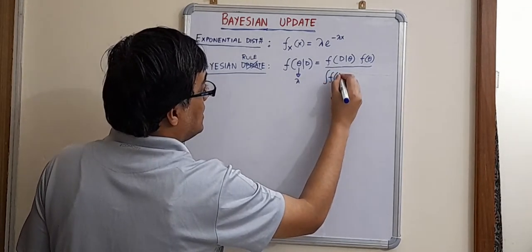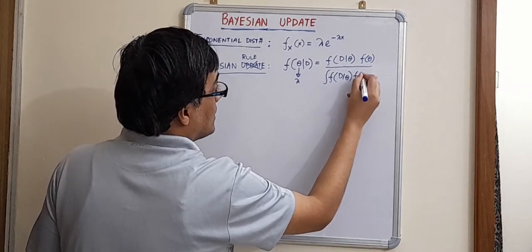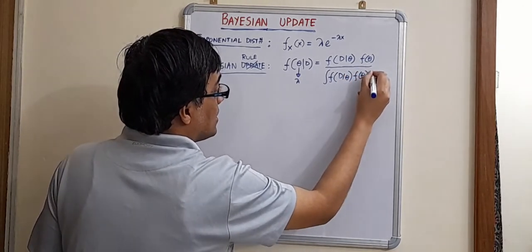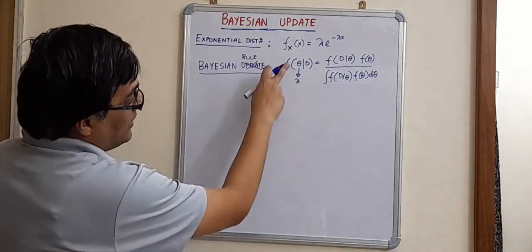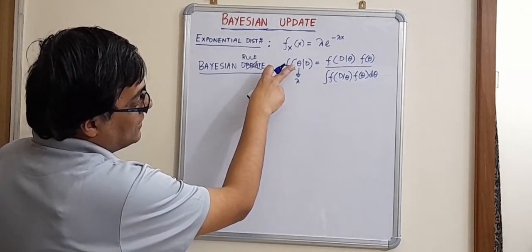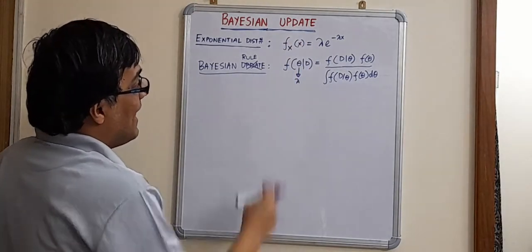The total probability will be given by the integral. It is f d given theta into f theta d theta. That is the total probability. Now from here on, I am not going to use theta. I will use lambda because we know that lambda is the parameter. And what is d?